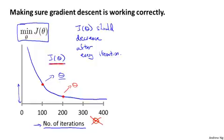One useful thing that this sort of plot can tell you is that, if you look at the figure I've drawn, by the time you've gotten out to maybe 300 iterations — between 300 and 400 iterations — it looks like J of theta hasn't gone down much more. So by the time you get to 400 iterations, it looks like this curve has flattened out. Way out here at 400 iterations, it looks like gradient descent has more or less converged because your cost function isn't going down much more. So looking at this figure can also help you judge whether or not gradient descent has converged.